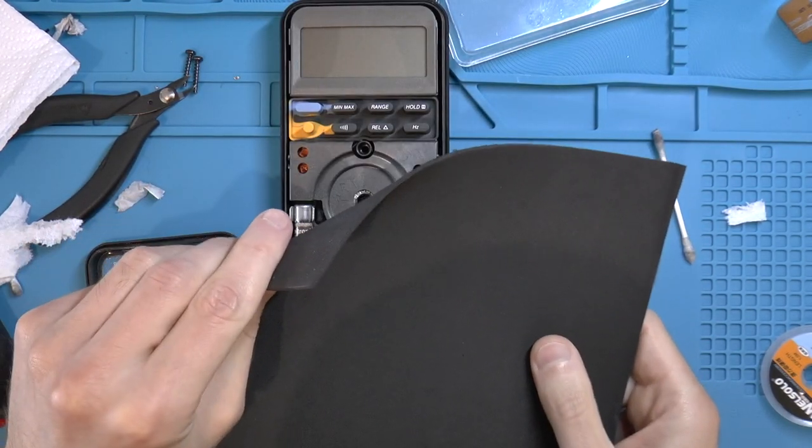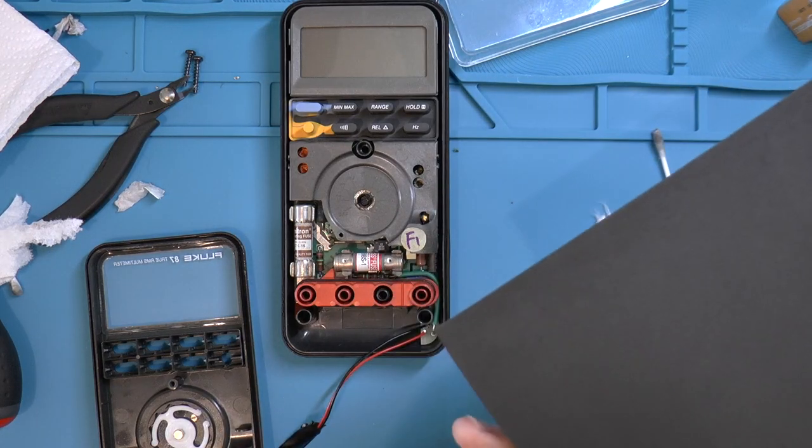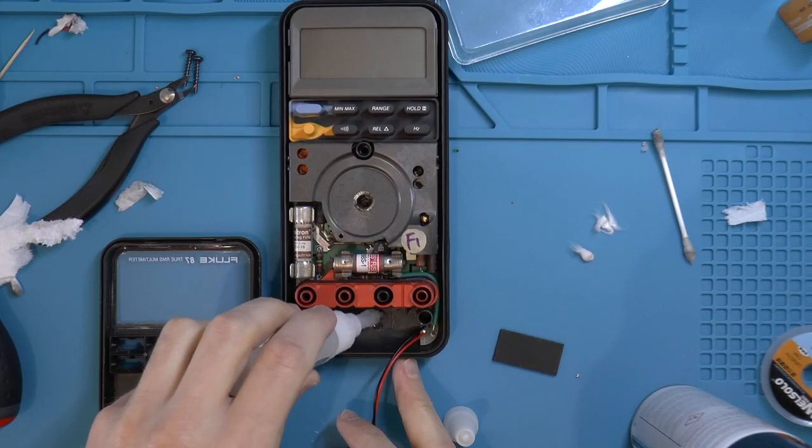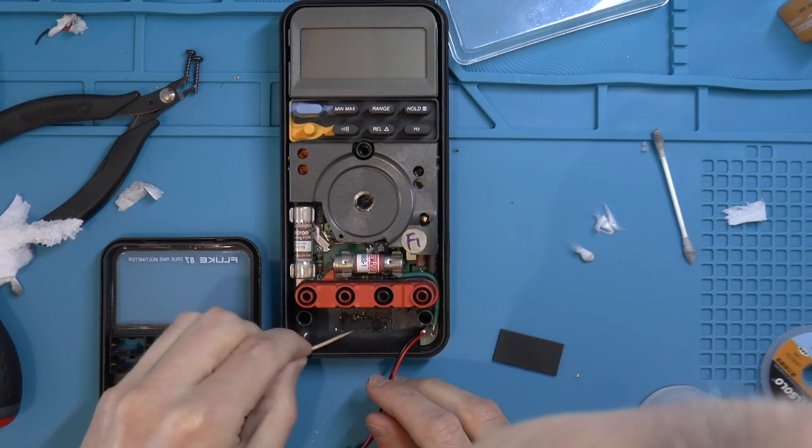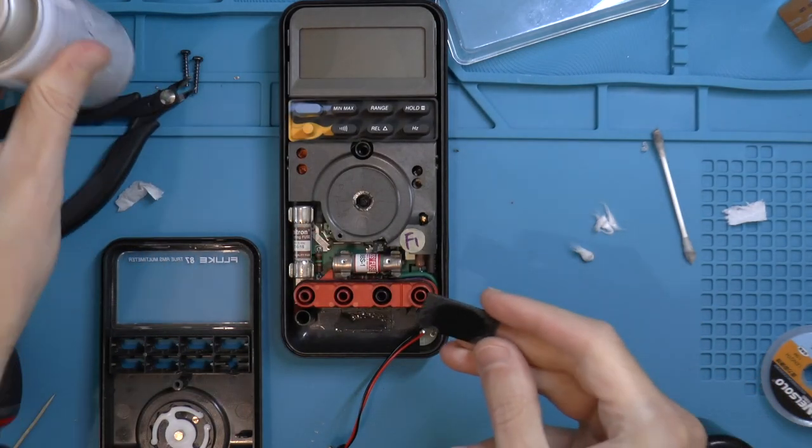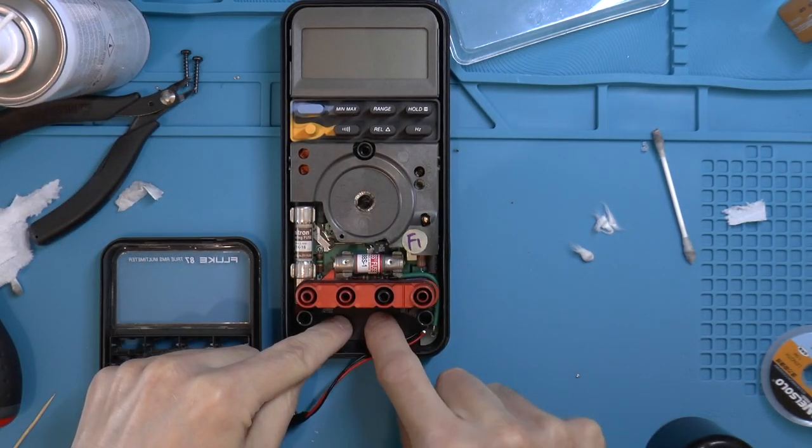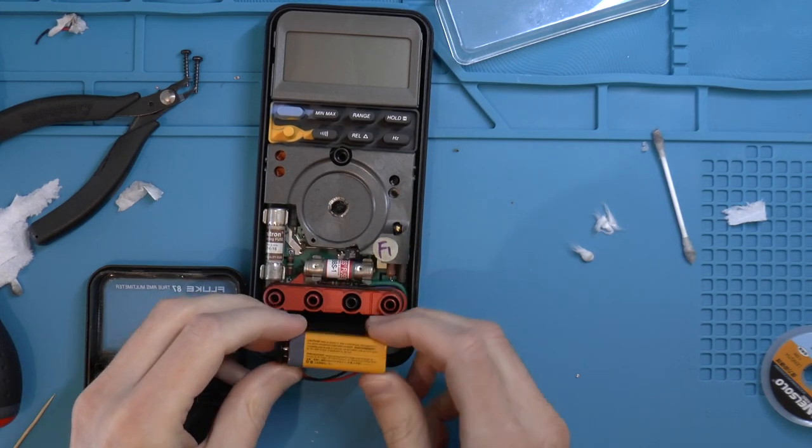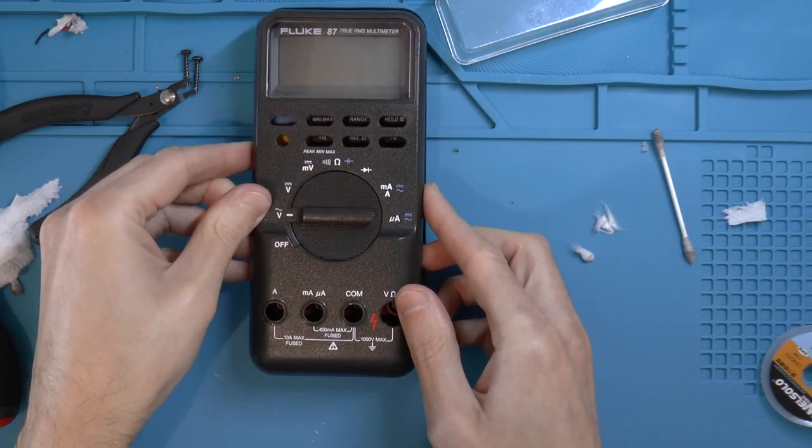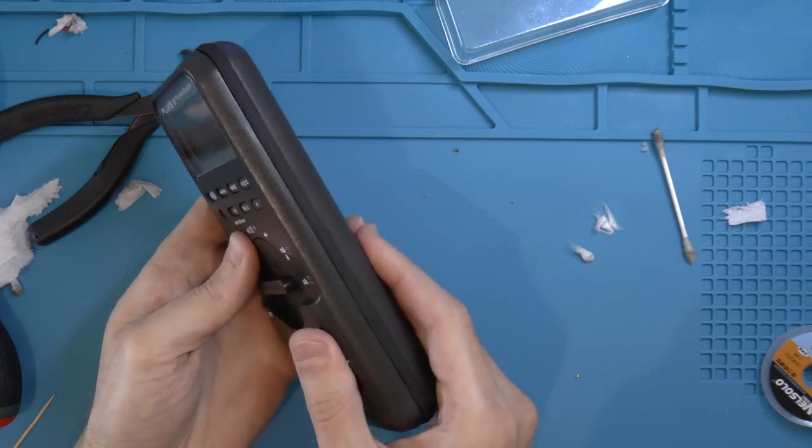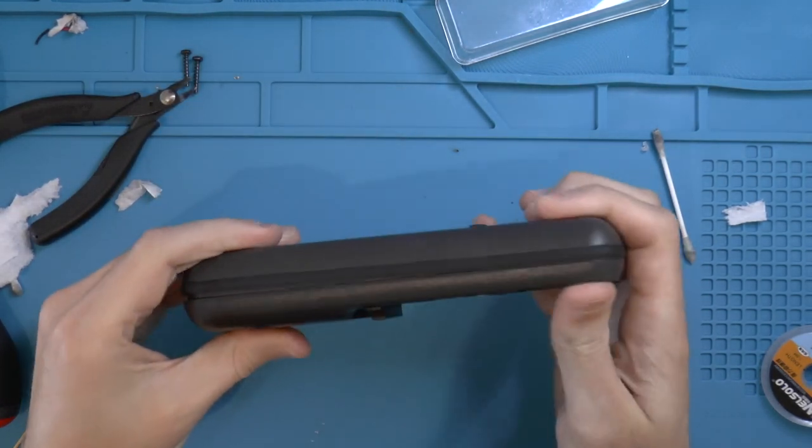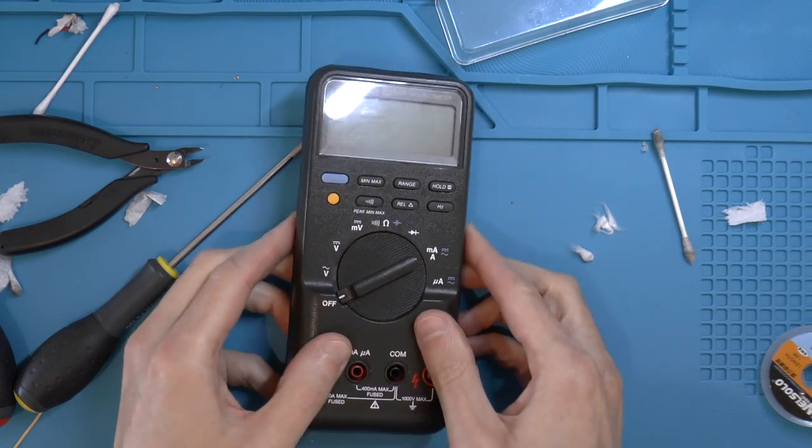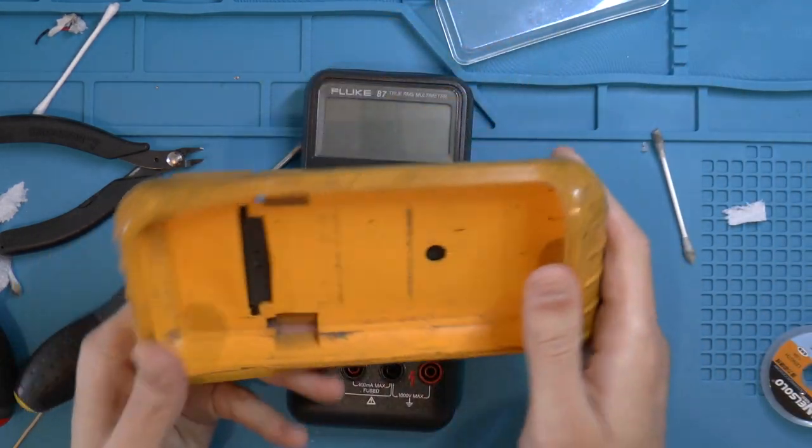I've got this thin foam material, so I'm going to cut a little bit off for the battery bay. This didn't come with any test leads but I've got a spare pair so that's okay. And now I just need to try to clean up the rubber bumper case.